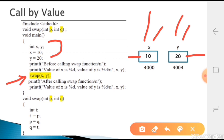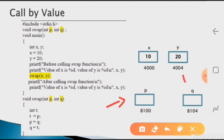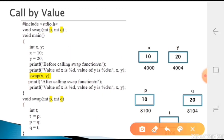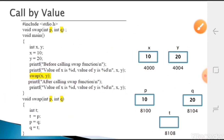We call the swap function passing x and y. The x value goes to the first parameter p, and y value goes to q. When the function is called, one memory location is allocated for int p and one for int q. The value of x is assigned to p, and y's value is assigned to q - so p holds 10 and q holds 20. Inside the function, declaring variable t also allocates memory for t.